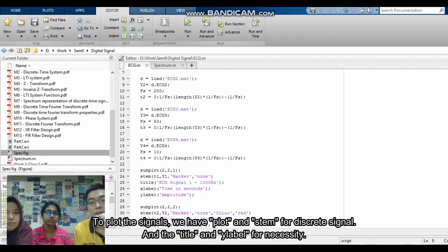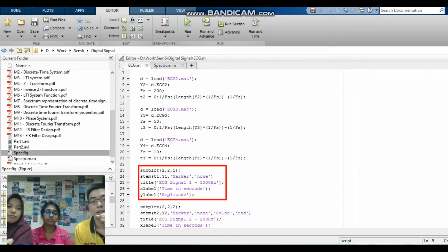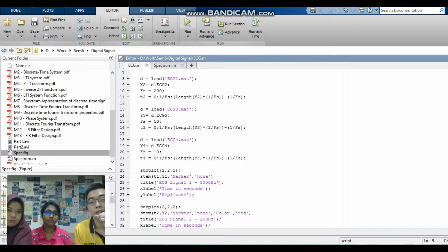To load the signal, we have subplot and subplot for the script signal and the title label and Y label for necessity. Now I will be running the code and the rest is explained by Lashia.